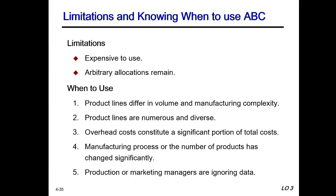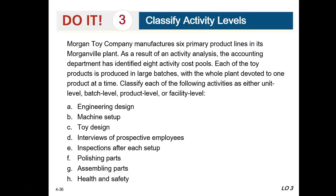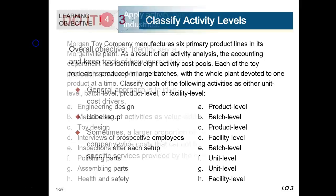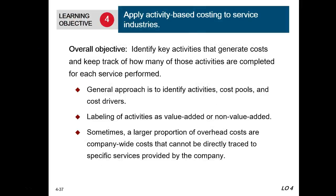The negatives of ABC: it's expensive, and it can be arbitrary in how costs are assigned. When should you use it? When product lines differ in volume and manufacturing complexity, when lines are very diverse, when overhead costs contribute to a large portion of total costs, when the manufacturing process or products have changed, or when employees ignore the data. The same concept applies to service industries as it does to manufacturing.